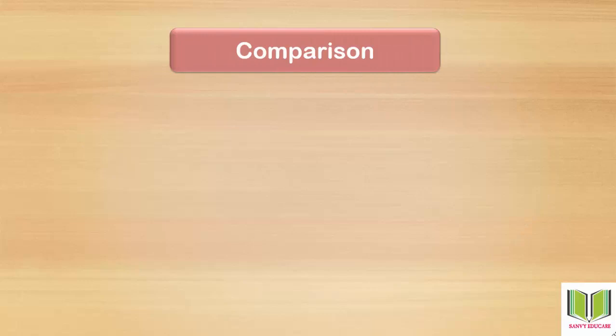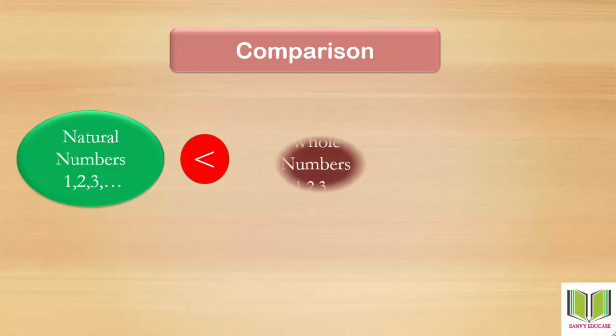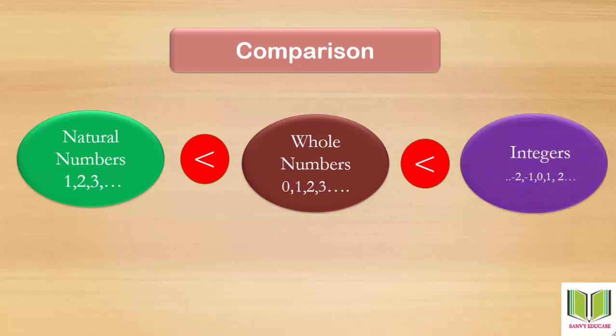Now let's see the comparison. Natural numbers are less than whole numbers, and whole numbers are less than integers. So we can say that natural numbers form the smallest set, and integers are the biggest set of numbers.